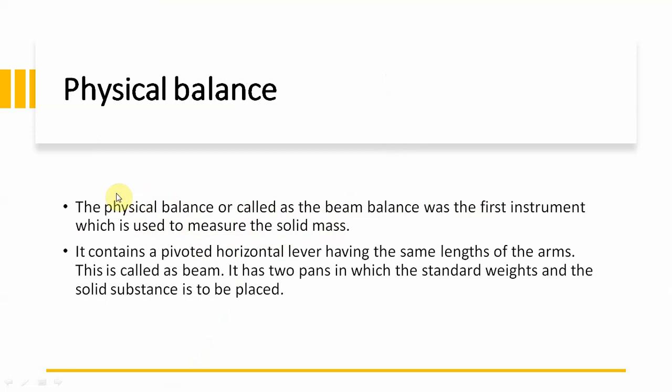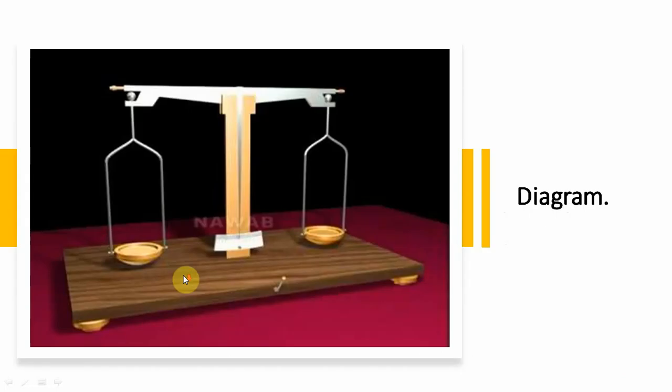We can also call it a beam balance. It contains a pivoted horizontal lever having the same length of the arms, this is called the beam. It has two pans in which the standard weights and the solid substances to be measured are placed. Here it is obvious from this diagram there are two pans and this is the structure of physical balance.